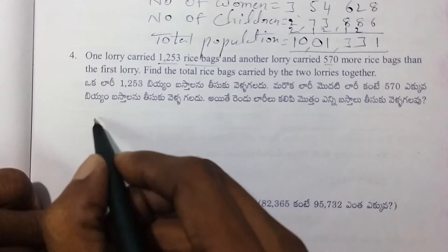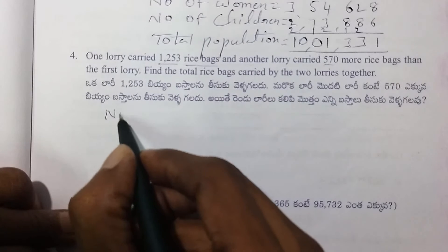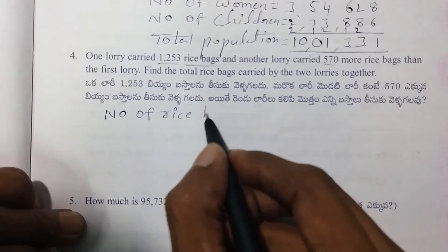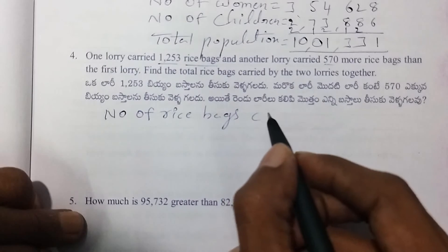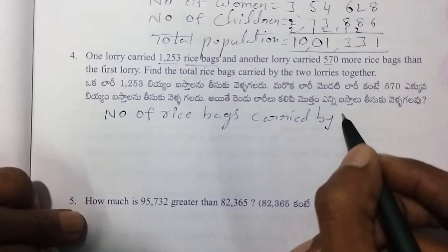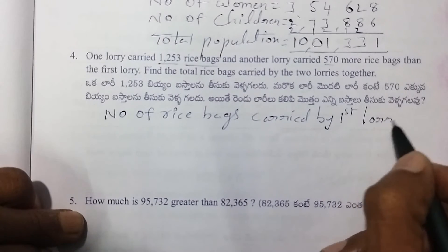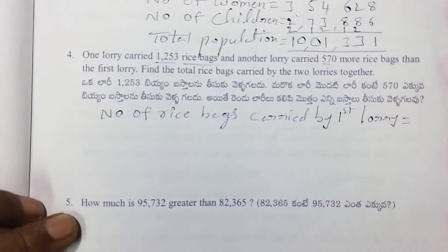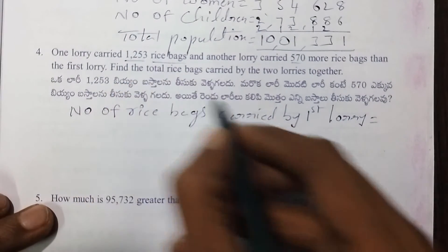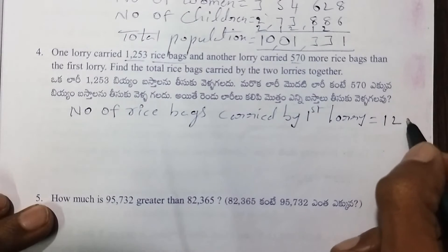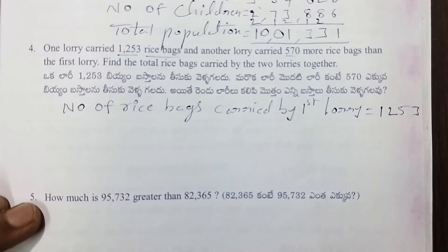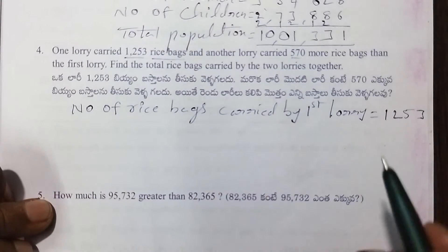Number of rice bags carried by the first lorry is 1,253. Next, number of rice bags carried by the second lorry.